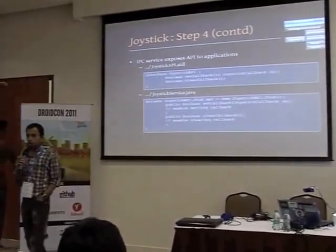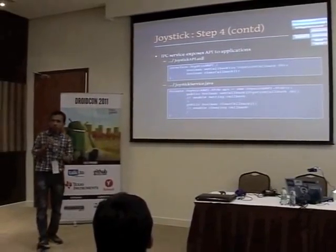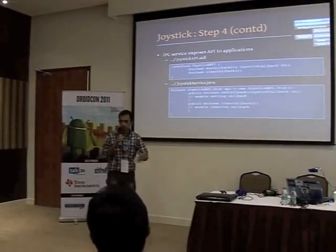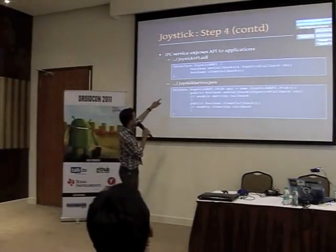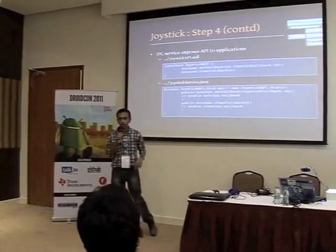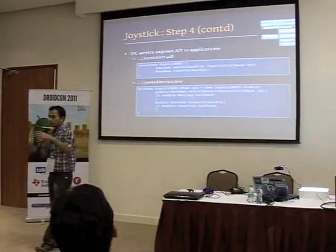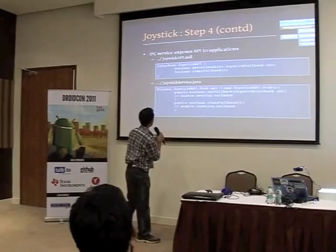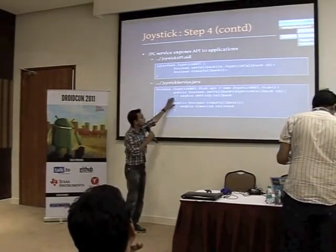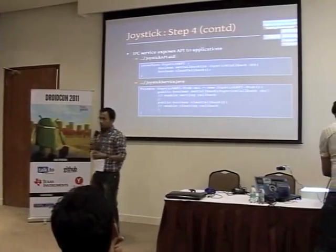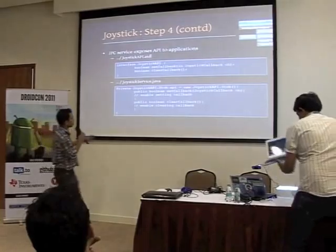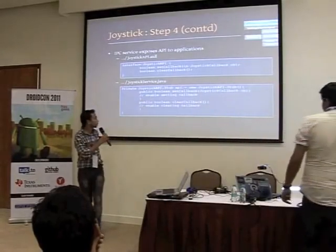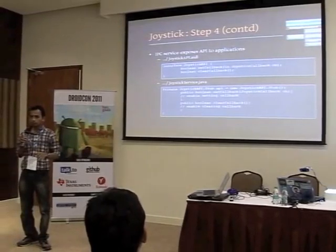This is where the inter-process communication between the service and the app takes place. Your service uses the JoystickAPI interface — it has two methods: setCallback and clearCallback. Whenever there's a key press, your application can set a callback defining what should happen when that key is triggered. In your service, you create a new API every time an application binds to it, and you put in the logic for what has to happen during the callback.